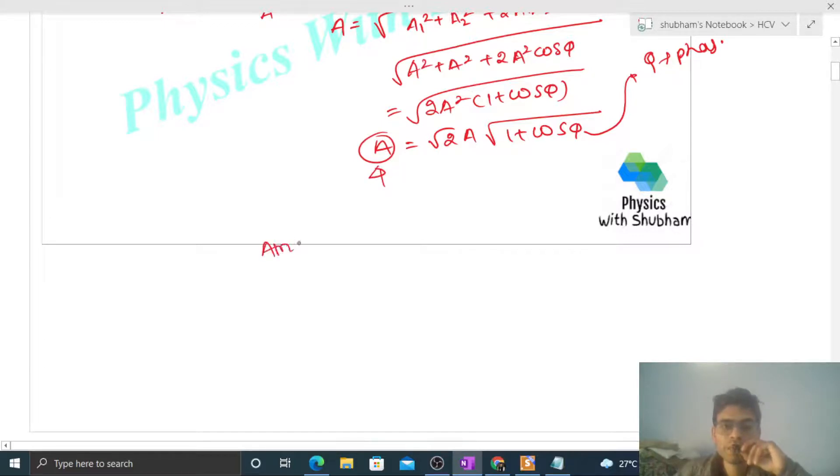Maximum value will be—put the maximum value of cos phi here. Maximum value of cos phi is one, so it will be one plus one, under root two into A into under root two. So this will be twice of A. That's your maximum value.